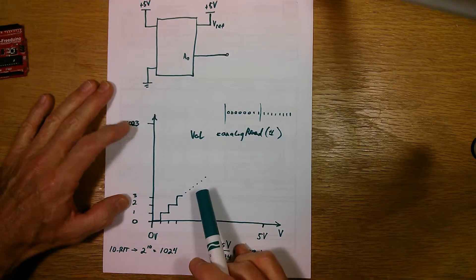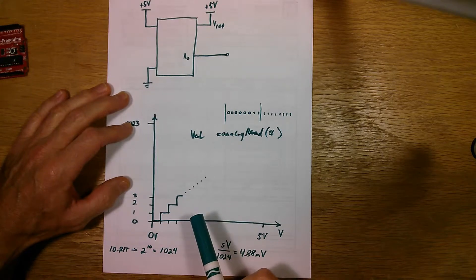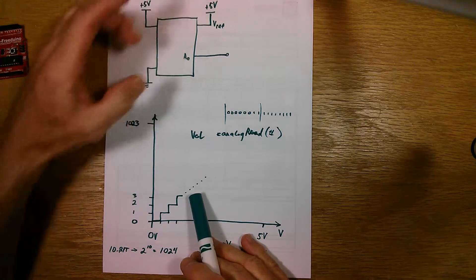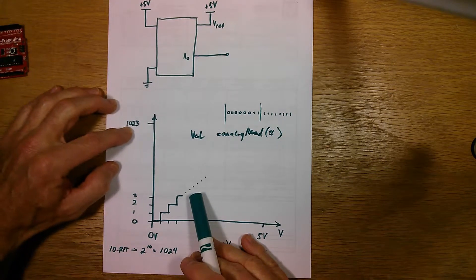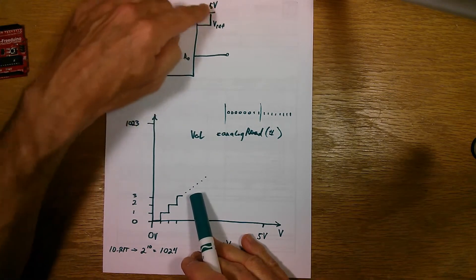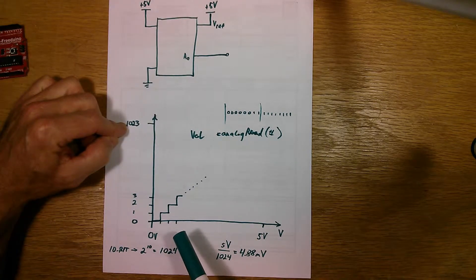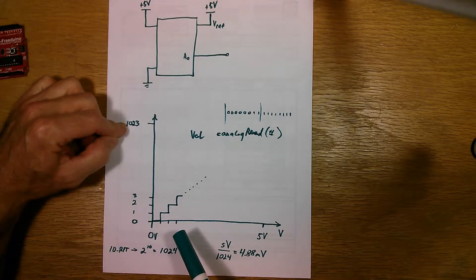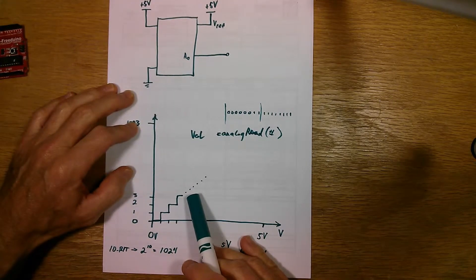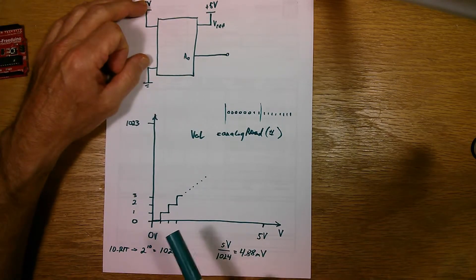Now, that number that we get out of the A to D converter is kind of meaningless because I want to read five volts, but I get a number that's in the range of zero to 1023. So how do I correlate those two together? Well, you have to do some math in the software that you write in order to convert this number here that comes out of the analog to digital converter into a number that actually means something for us to read.